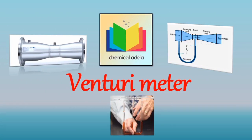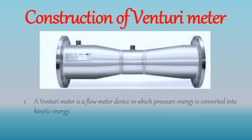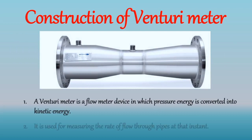Now first let's see construction of Venturimeter. A Venturimeter is a flow meter device in which pressure energy is converted into kinetic energy. It is used for measuring the rate of flow through pipes at that instant.